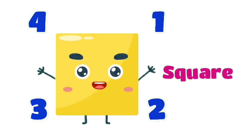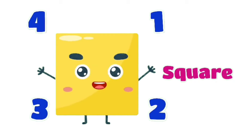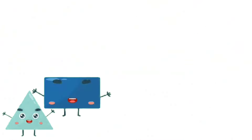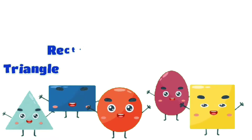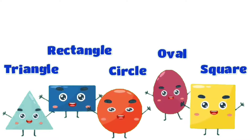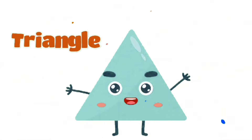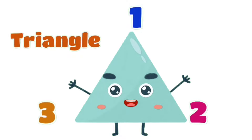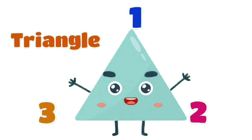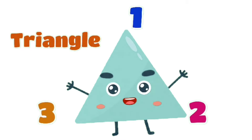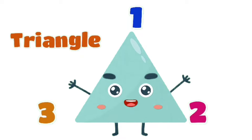Shaped like a box. I'm a four-sided square, and all four sides are the same. Triangle, rectangle, circle, oval, square. I'm a triangle with three sides, three straight sides. Three straight sides, I'm a triangle with three sides and a pointy head.